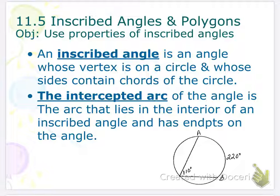An inscribed angle is an angle whose vertex is on the circle. So vertex is on the circle. And whose sides contain the chords of a circle. Remember, a chord is a segment that has endpoints on the circle.